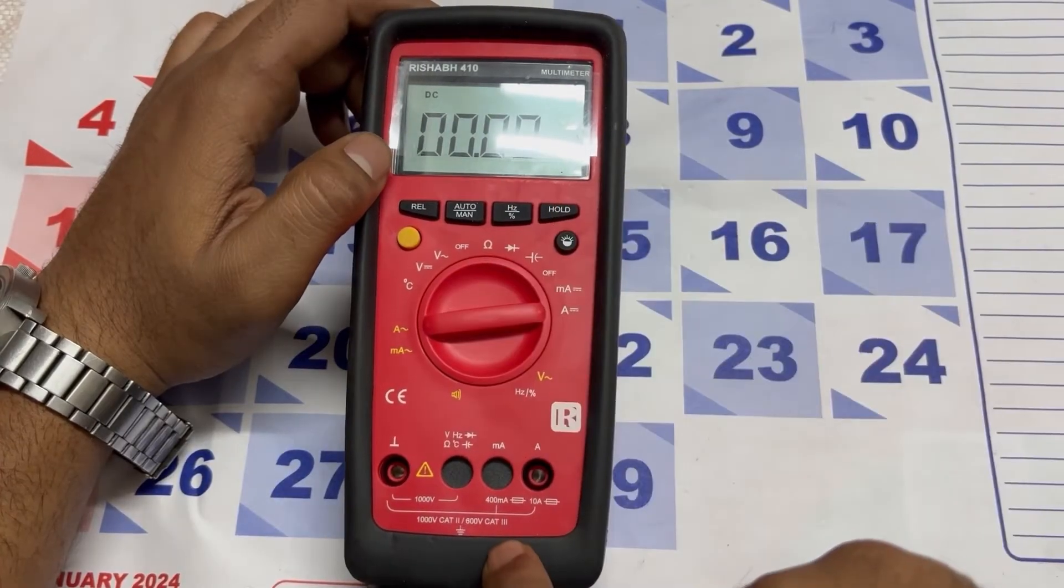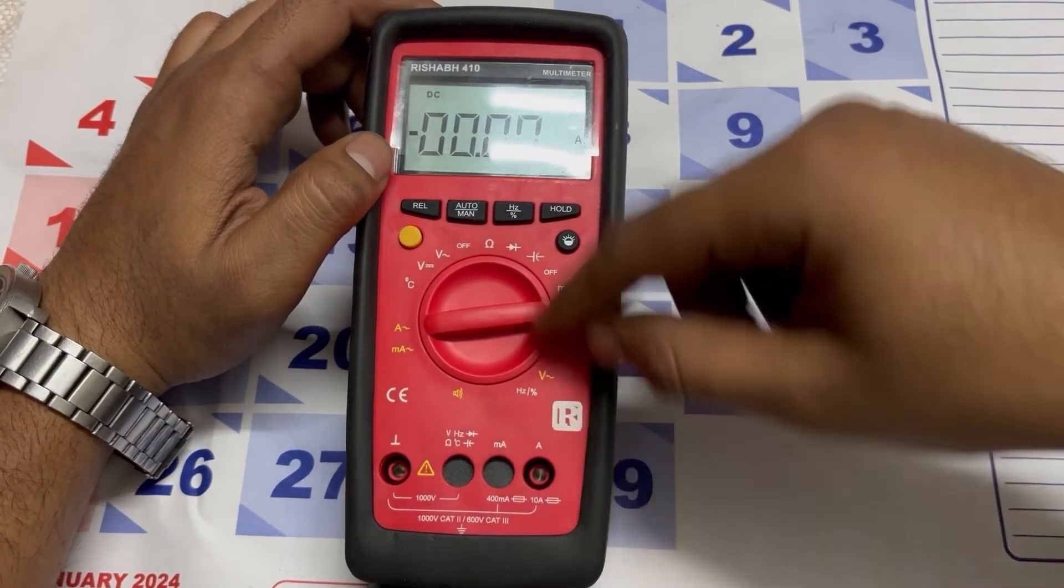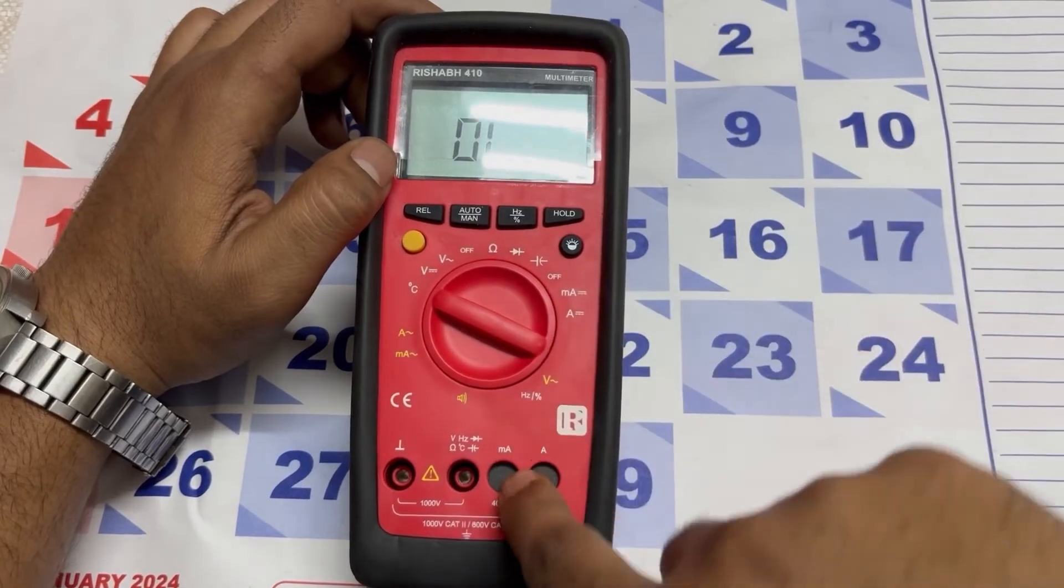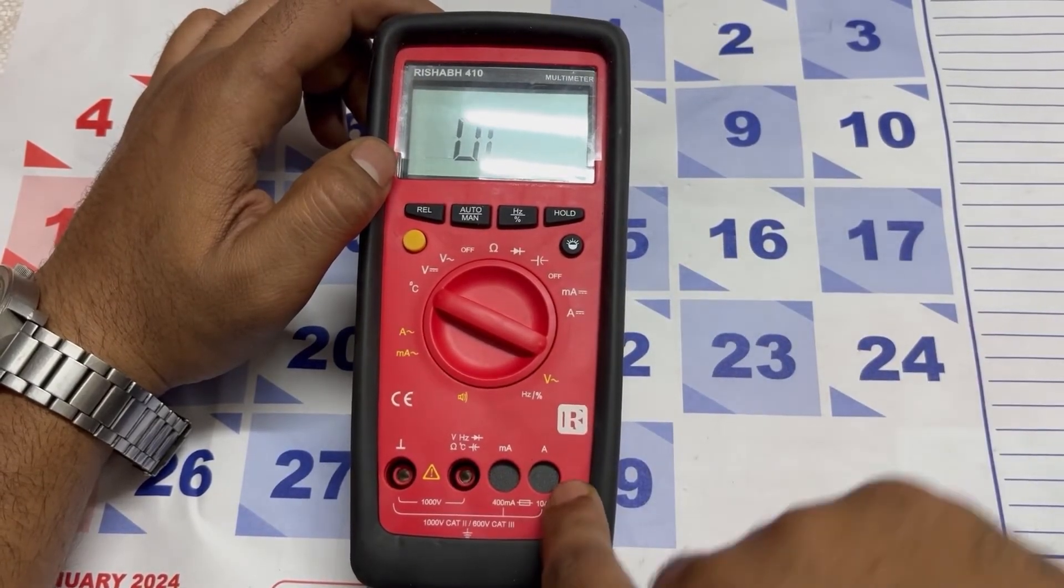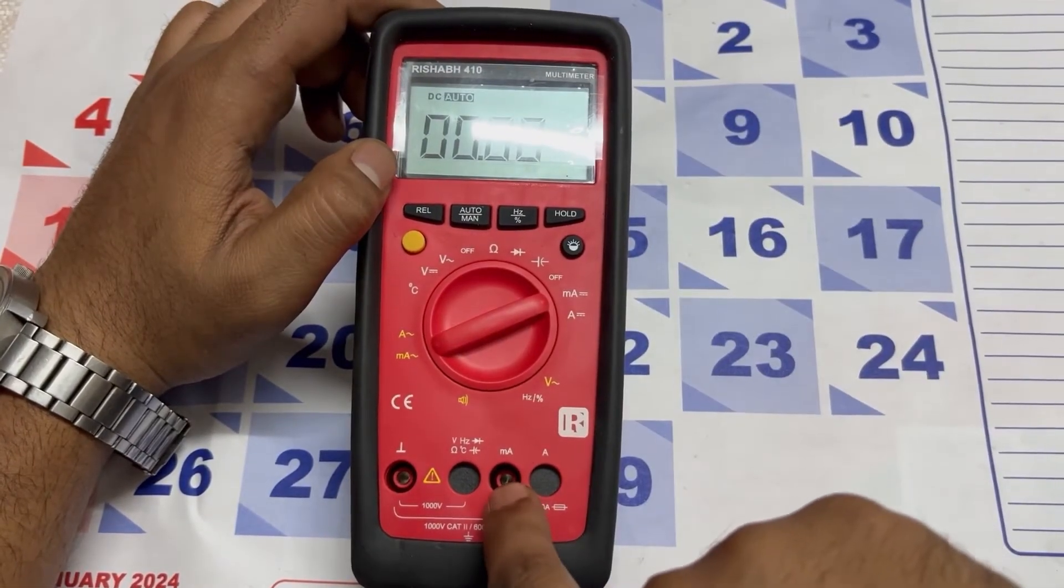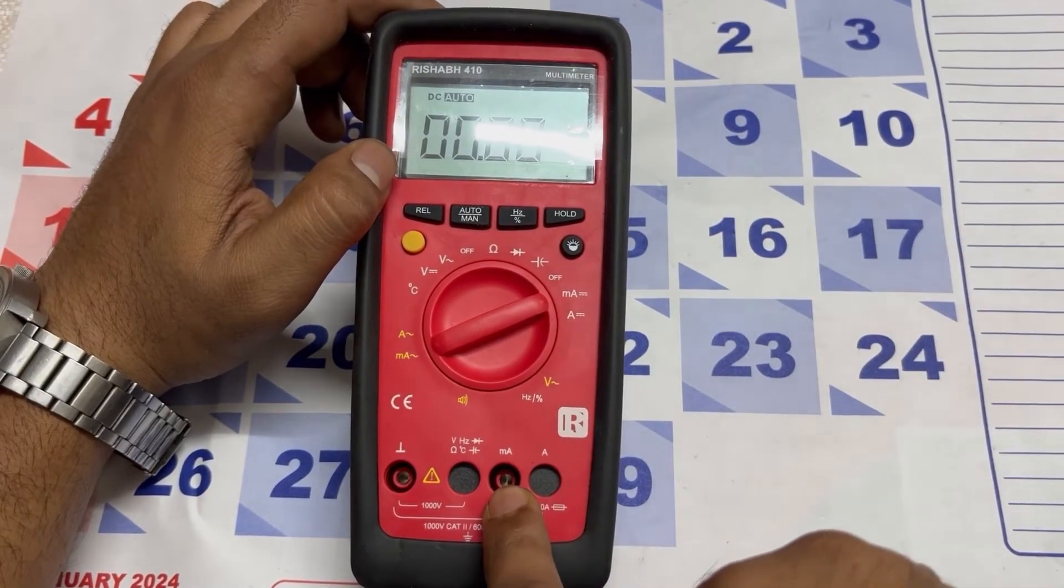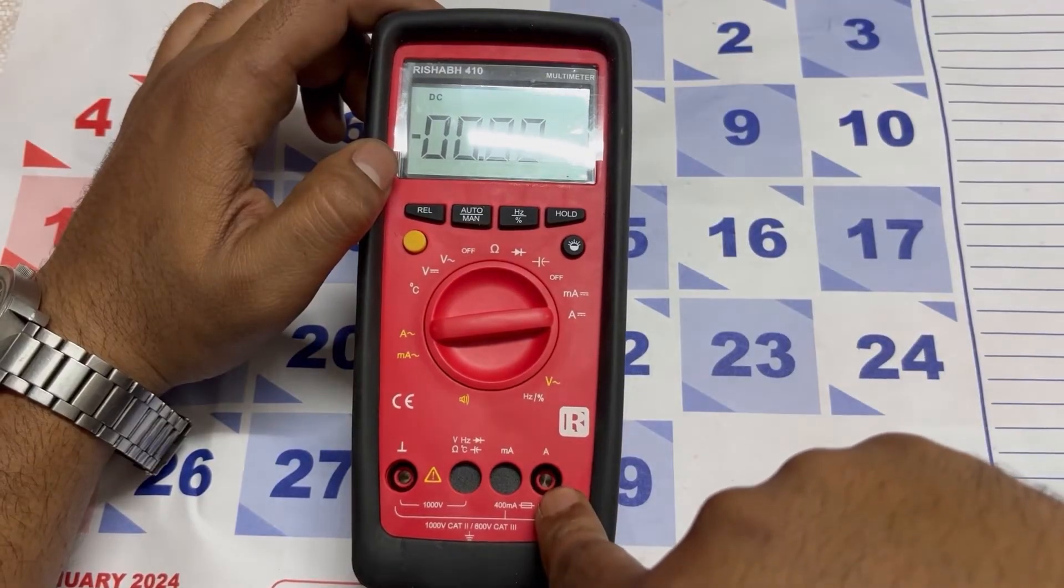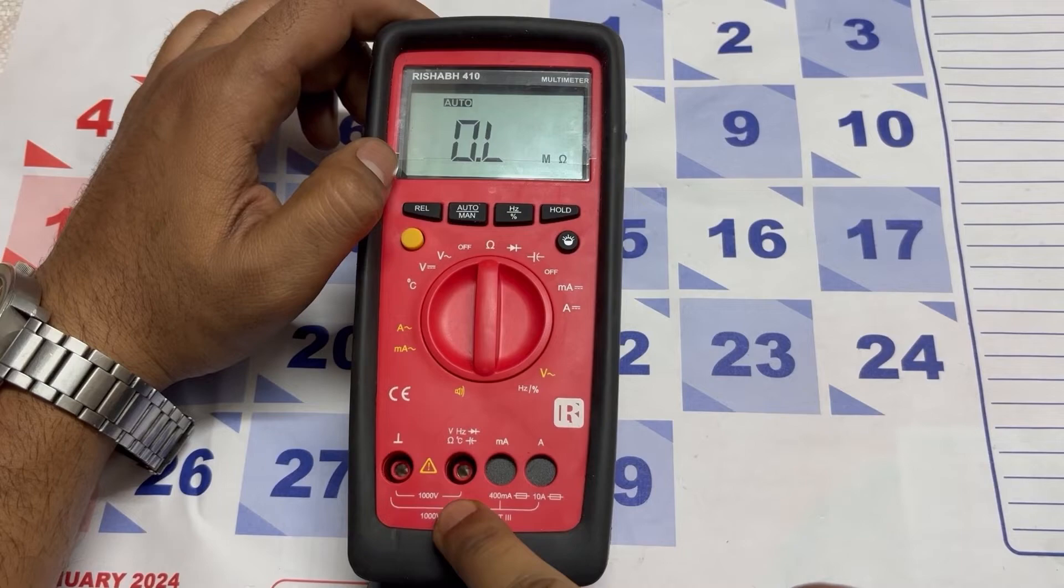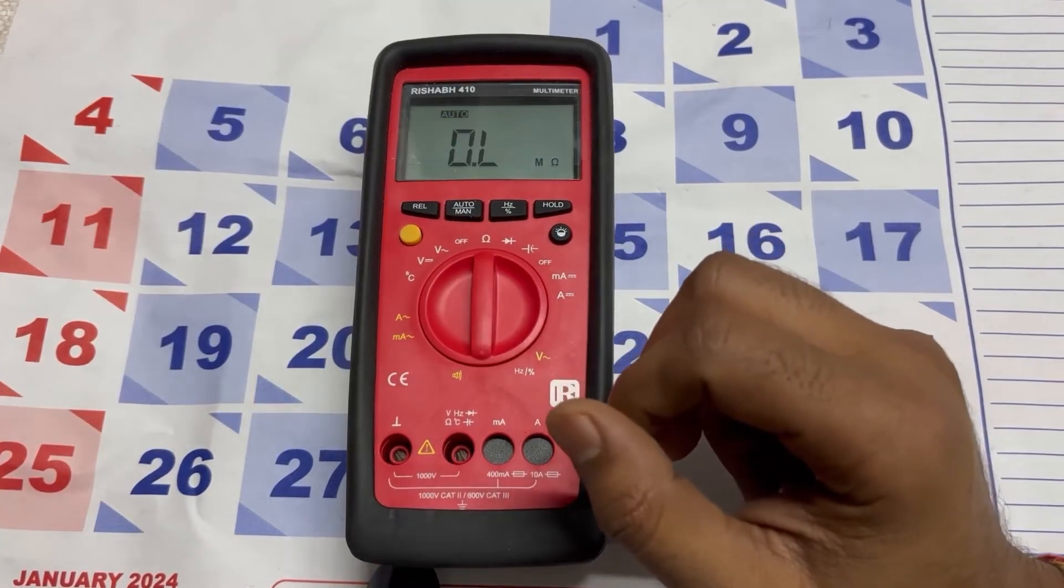You have noticed something - when I switch the selector switch, it closes the shutter off from mA and A. And when I turn this for milliamps, the shutter is open for the probe to be inserted here. For ampere to be inserted here. Here you can see that you can check 1000 voltage. Now I am going to show you the probes.